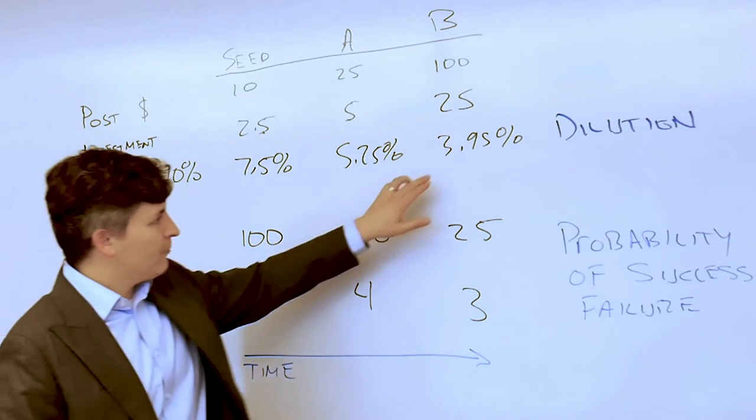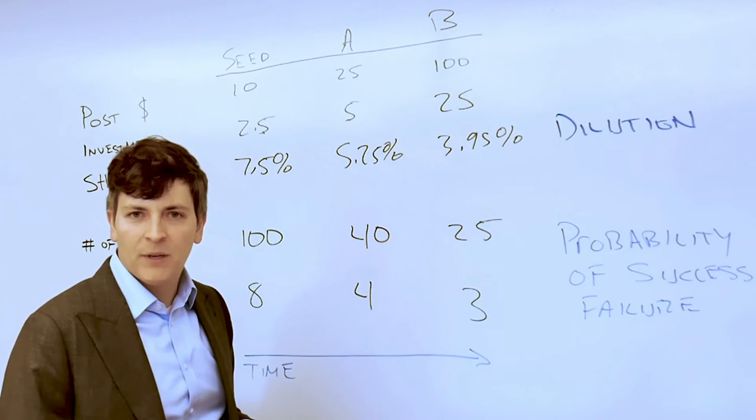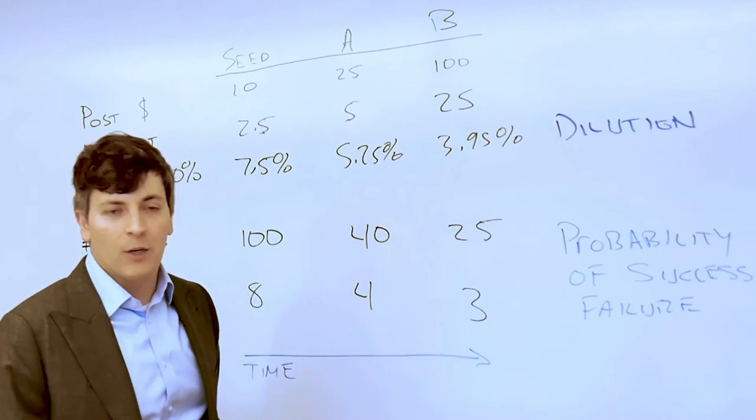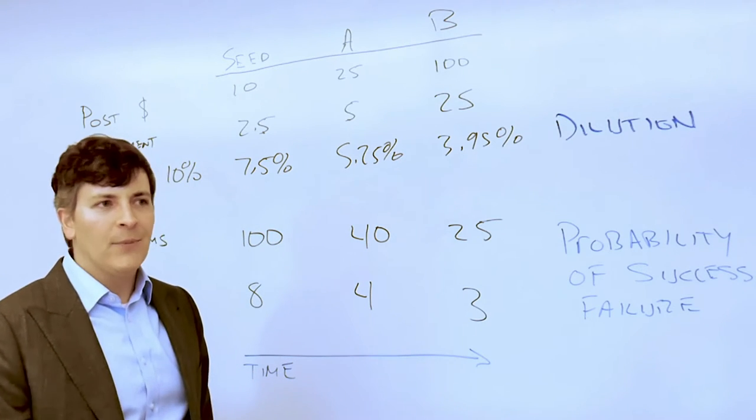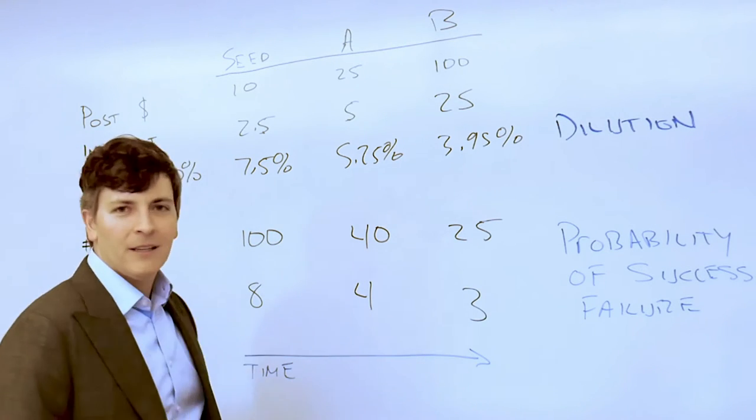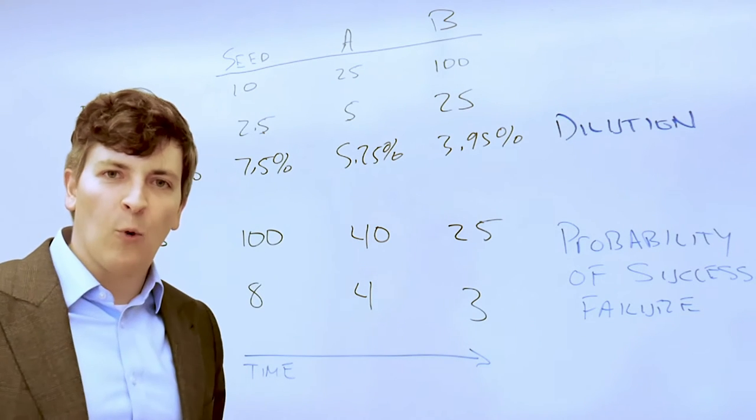Well, after dilution in Series B, $100 million post-money valuation and 4% of the fully diluted shares means that your $10 million dream is worth about $4 million.